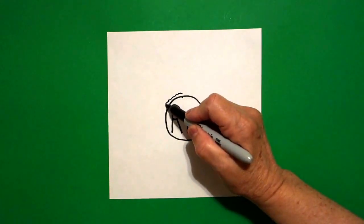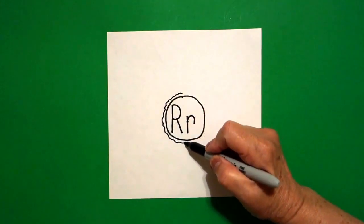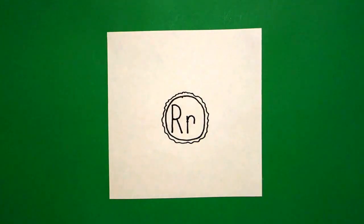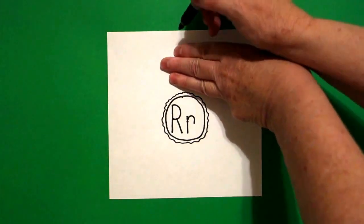Starting at the top, I'm going to draw a wavy, wavy, wavy, wavy line all the way around my donut hole.